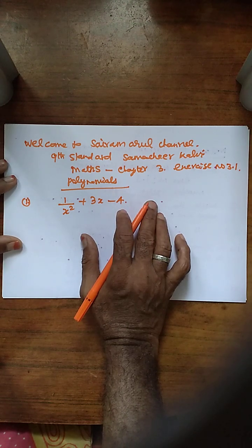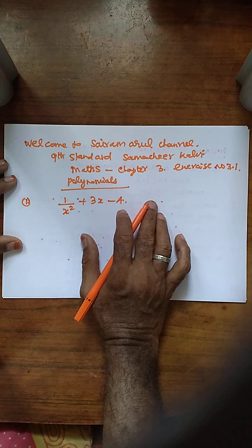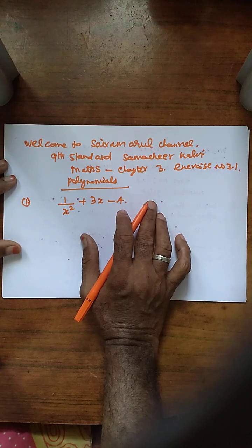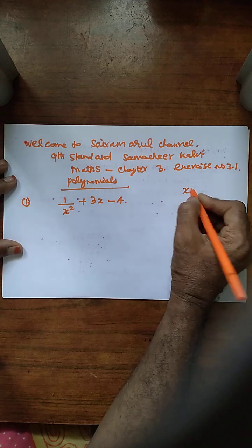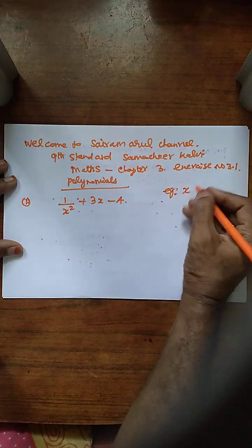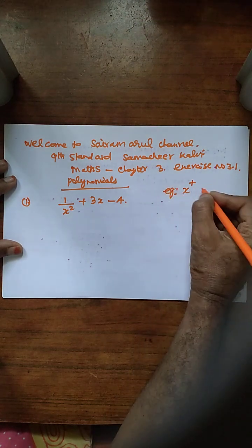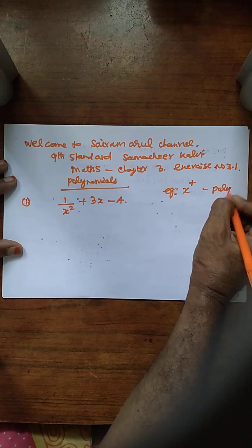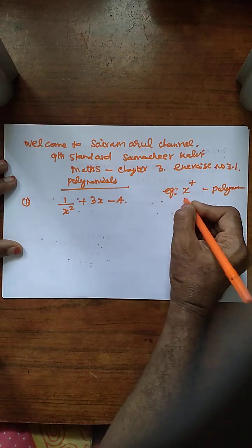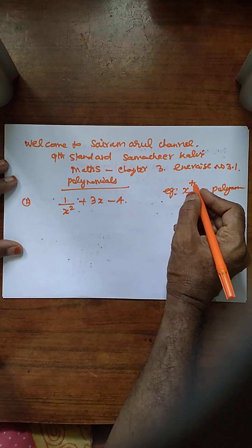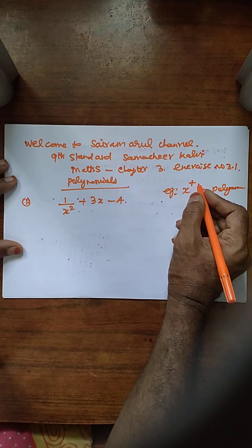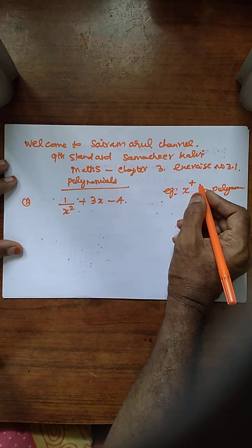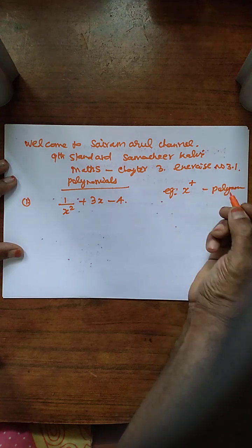First we have to find out if it is a polynomial or not. For example, x power plus means polynomial: x or x squared or x power cube. Like this, if the variable's power is positive, then it's a polynomial.